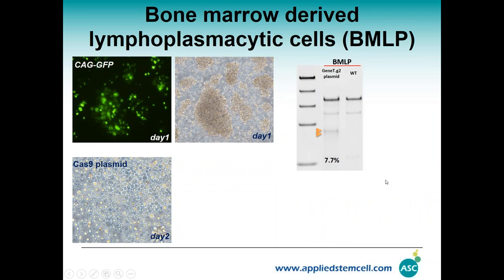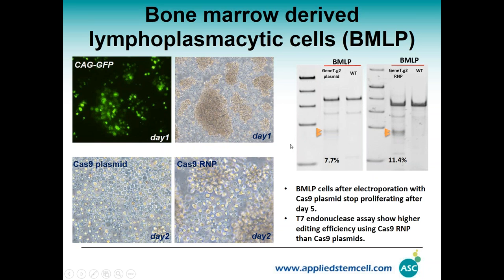Another cell line we discuss is B cells — lymphoblastic cells. These cells can be transfected with relatively high efficiency; however, the cells gradually die after five days. If you collect cells two days after using a DNA guide RNA plasmid you are able to see some indels, but the cells simply stop growing when using DNA plasmid. If you use Cas9 RNP, cell growth is much better than with DNA plasmid and you are able to achieve higher transfection efficiency.